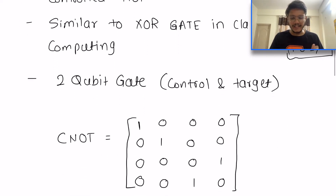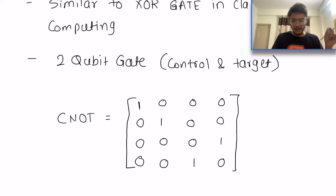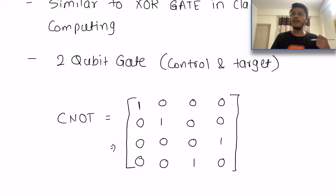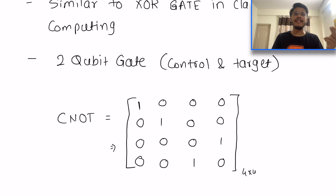The CNOT gate is a two-qubit gate. There are other multi-qubit gates involving three or more qubits as well. The matrix representation of the CNOT gate is a 4×4 matrix, since it operates on two qubits. In previous videos, the X, Y, and Pauli gates were 2×2 matrices because they acted on a single qubit — but this one acts on two qubits, hence it is a 4×4 matrix.